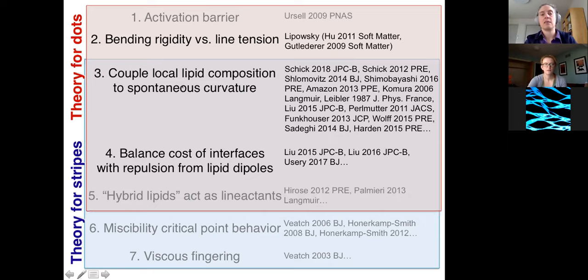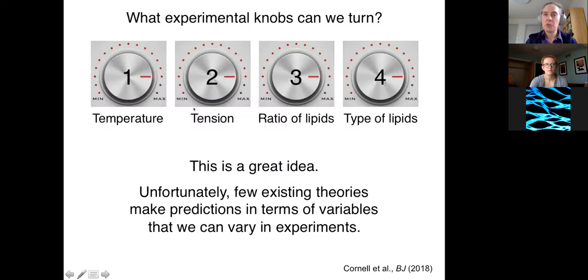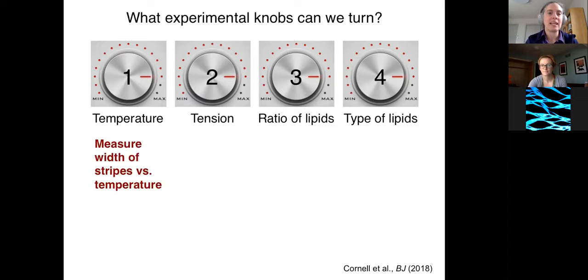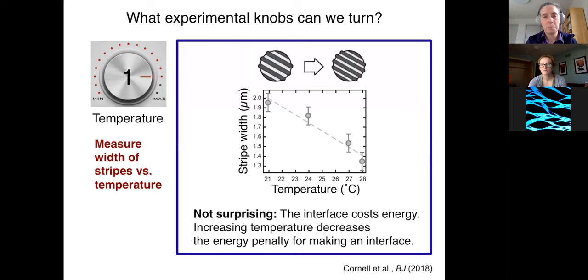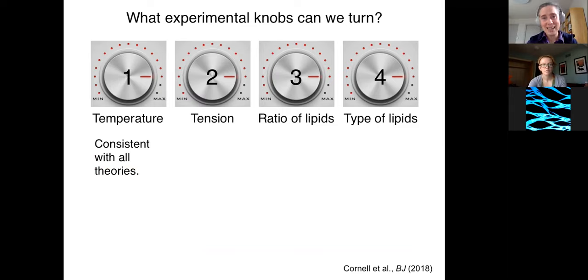Let me attack this first one. To be able to think about these theories, we can measure in the laboratory. We can think about what experimental knobs we can turn in the laboratory. We can adjust temperature and tension and the ratio of lipids and the type of lipids. I think this is a great idea because I'm an experimentalist. But unfortunately, few existing theories make predictions in terms of these variables that we can measure in experiments. But nevertheless, let's see how far we can get. First, let's change temperature. What we find is that increasing temperature decreases the stripe width. That's entirely expected. The interface costs energy. Unfortunately, it doesn't make any distinction between any of the theories.